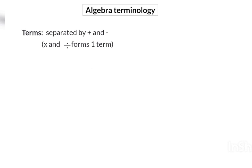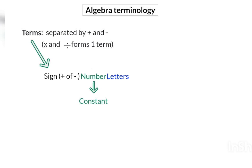A term can consist of a sign, which is a plus or a minus, then a number, which is multiplied or divided to letters. For the numbers, we use the term constant because their value stays constant. And for letters, we use the term variables because their value can change.